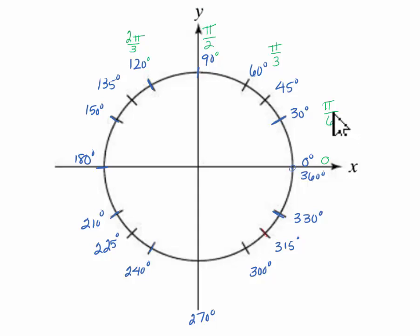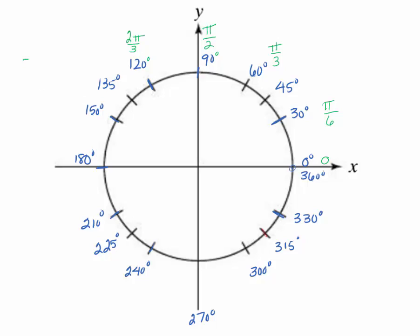Again, we'll keep counting pi over 6s, multiples of it: 1 pi over 6, 2 pi over 6, 3 pi over 6, 4 pi over 6. When I get to 150, that would be 5 pi over 6. And that actually doesn't reduce, so we'll put that right in: 5 pi over 6. This brings us to 6 pi over 6, and if we have 6 pi over 6, that's just equal to pi.